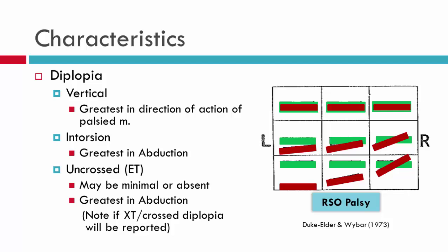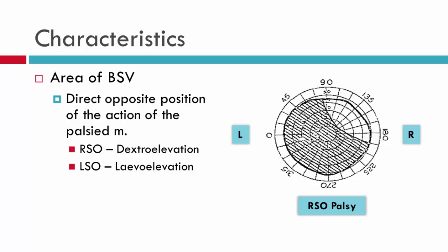For diplopia, a right superior oblique diplopia chart is depicted here. The greatest separation of the vertical deviation will usually be in laevo-depression for a right superior oblique, but the torsion — the intorsion patients experience — will be greatest in dextrodepression. If there is a horizontal deviation, often it will be an esotropia, meaning uncrossed diplopia; if an exotropia is present, the patient will have crossed diplopia. The horizontal component of the deviation, being the secondary action of the extraocular muscle, will generally be greatest in abduction — for a right superior oblique palsy, that will be in right gaze.